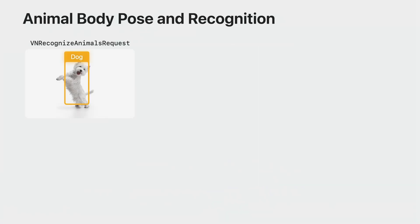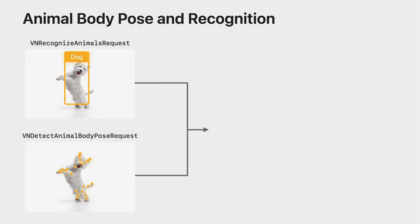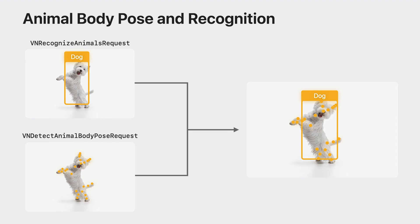As mentioned before, animal recognition allows you to localize and recognize the animal, while animal body pose returns the full body landmarks. Combining those two requests will allow you to know what type of animal was detected, the location, and the pose — so now you can know who is messing up the dining table. This gives you a lot of opportunities to develop interesting applications for your pets, like a dog treat dispenser activated on animal recognition and animal pose detection.